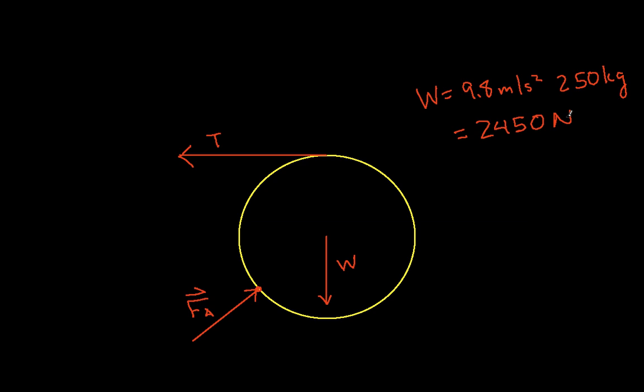Some of you are probably thinking, wait, you're missing a force. Why don't we have a reaction force from the ground pushing up? Well, in general we would. However, for this problem, we want to know the tension necessary to lift the barrel over the curb. Right before the barrel starts to move, we have enough tension that exactly balances the weight so there is no reaction force pushing up on the barrel.